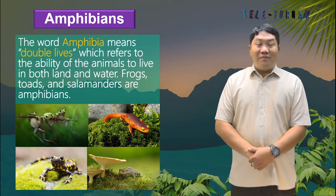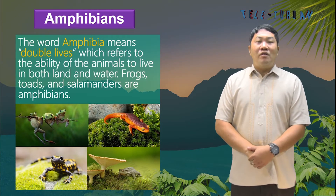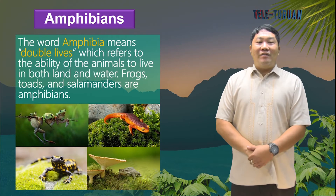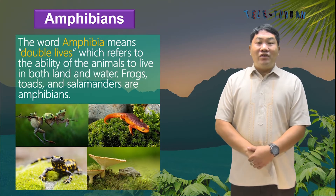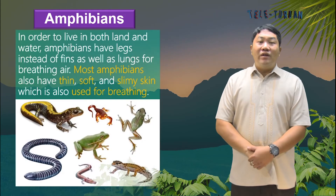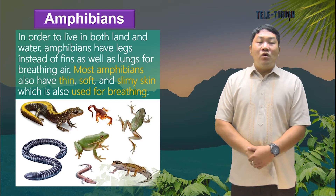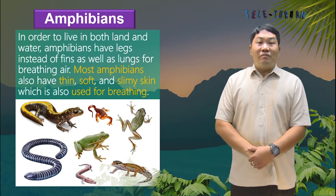Next are the amphibians. The word amphibian means double lives, which refers to the ability of the animal to live in both land and water. Frogs, toads, and salamanders are amphibians. They are also cold-blooded animals, which means their temperature depends on the temperature of their surroundings. They feed on insects, worms, and other animals. In order to live in both land and water, amphibians have legs instead of fins, as well as lungs for breathing air. Most amphibians also have thin, soft, and slimy skin, which is also used for breathing.